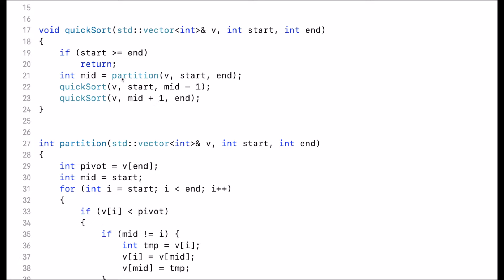The next step is to call the partition function. This is actually where the sorting takes place and it returns the middle index which I'll use to split up the vector.